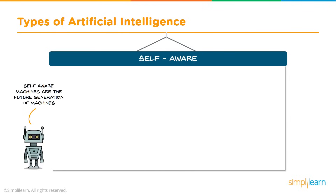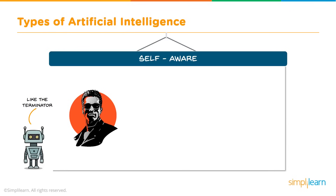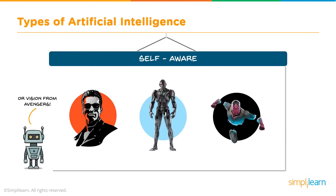And finally, as we get deep into the sci-fi futuristic, we have self-aware. Self-aware machines are future generation machines. They will be super intelligent, sentient, and conscious — like the Terminator, Ultron, or Vision from Avengers. For right now these are mostly movie or cartoon characters, but we certainly are getting closer to seeing them in the real world. Hopefully they'll be of the type of the good guys and not the bad guys we see in AI sci-fi movies.